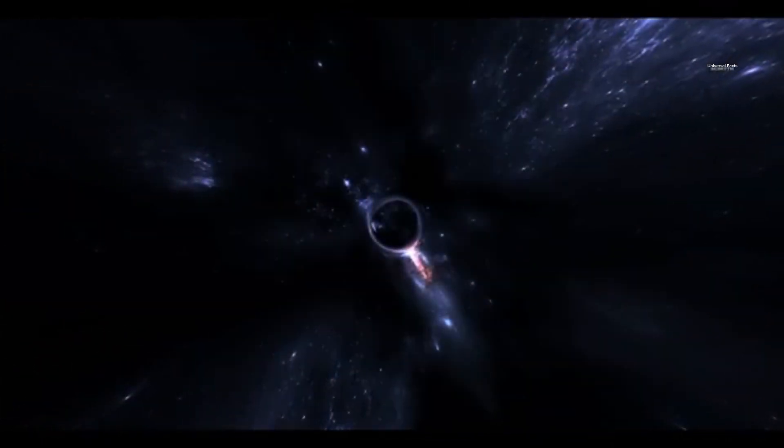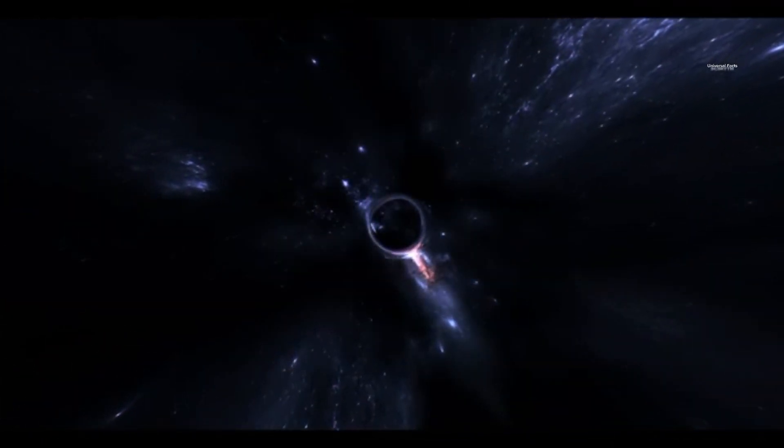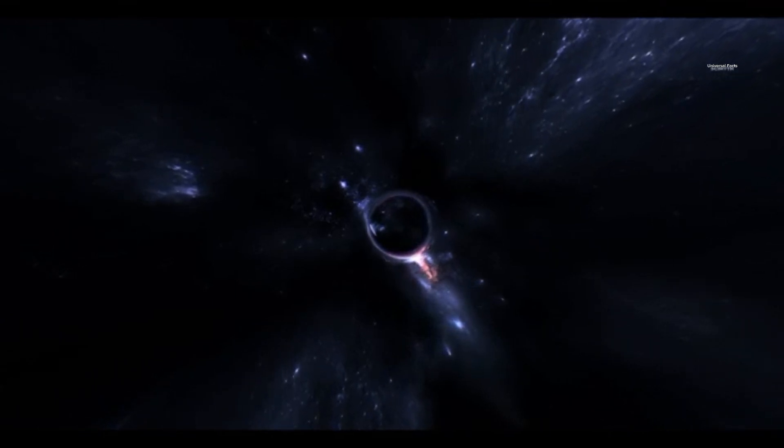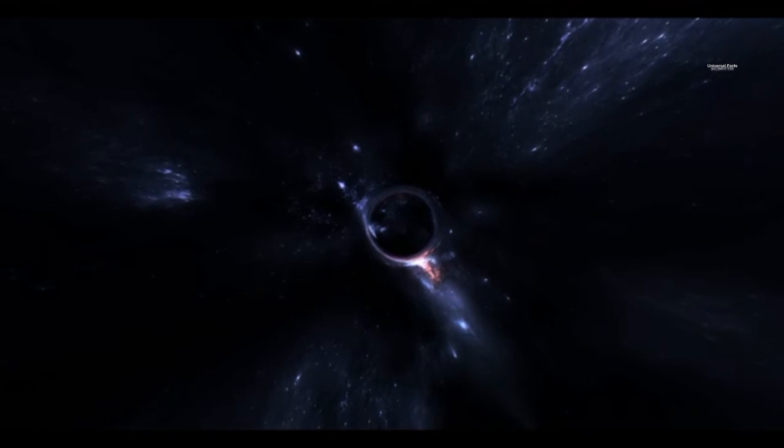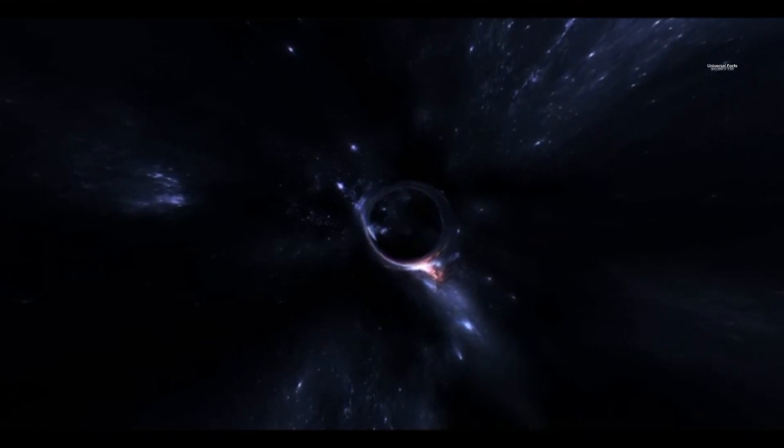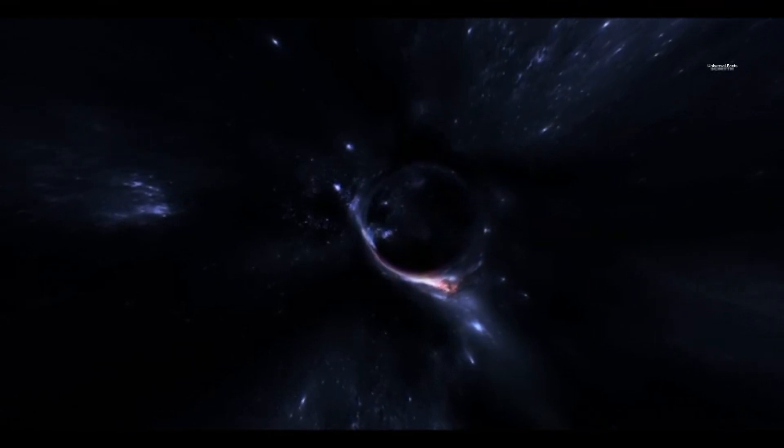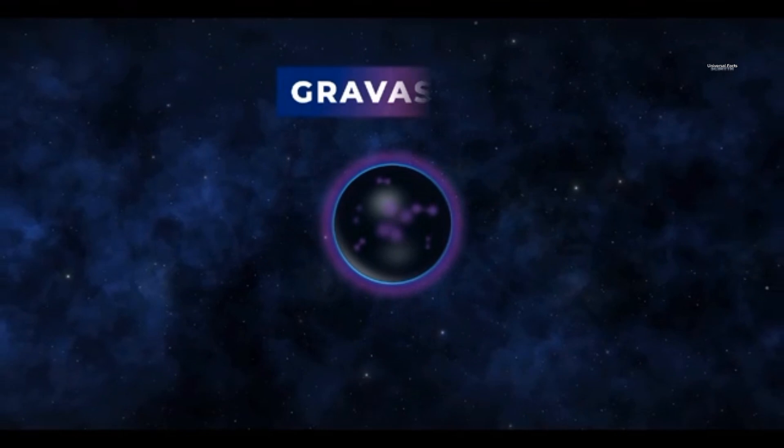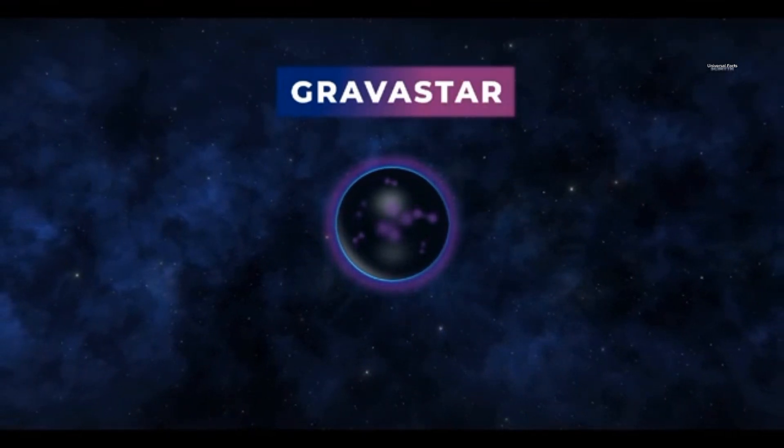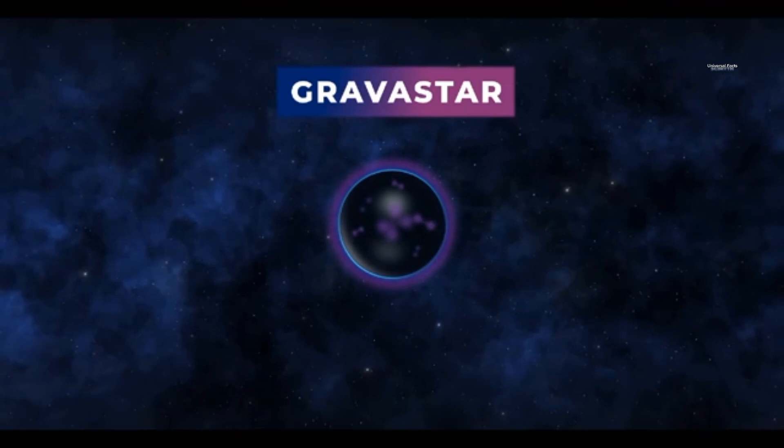But have you ever heard of a star that has a vacuum inside it? A star that contains nothing but empty space? This concept may sound strange and bizarre, but scientists hypothesize that such stars could exist in our universe. These enigmatic objects are called gravistars. They are considered one of the most mysterious types of stars.